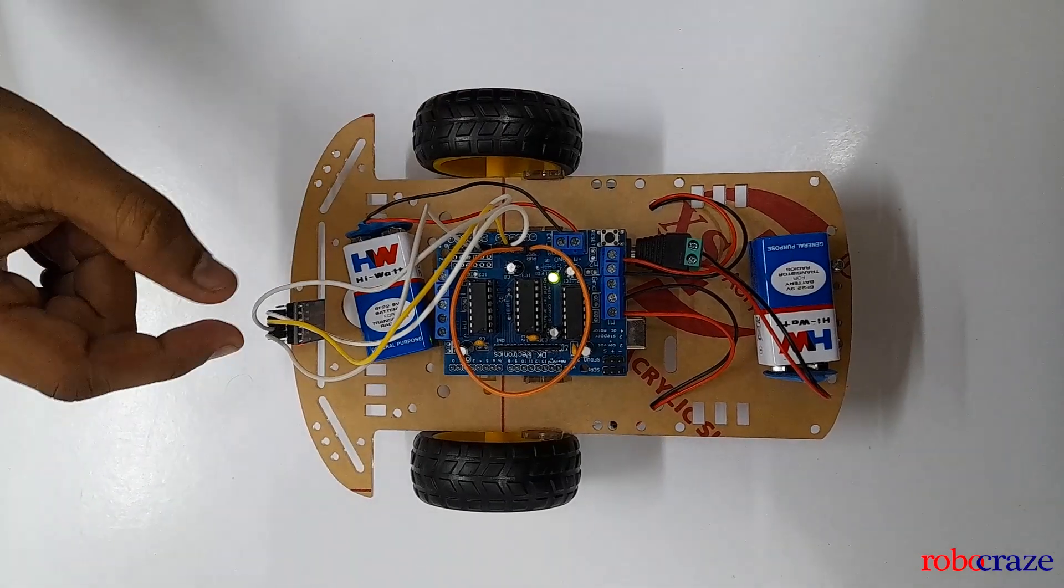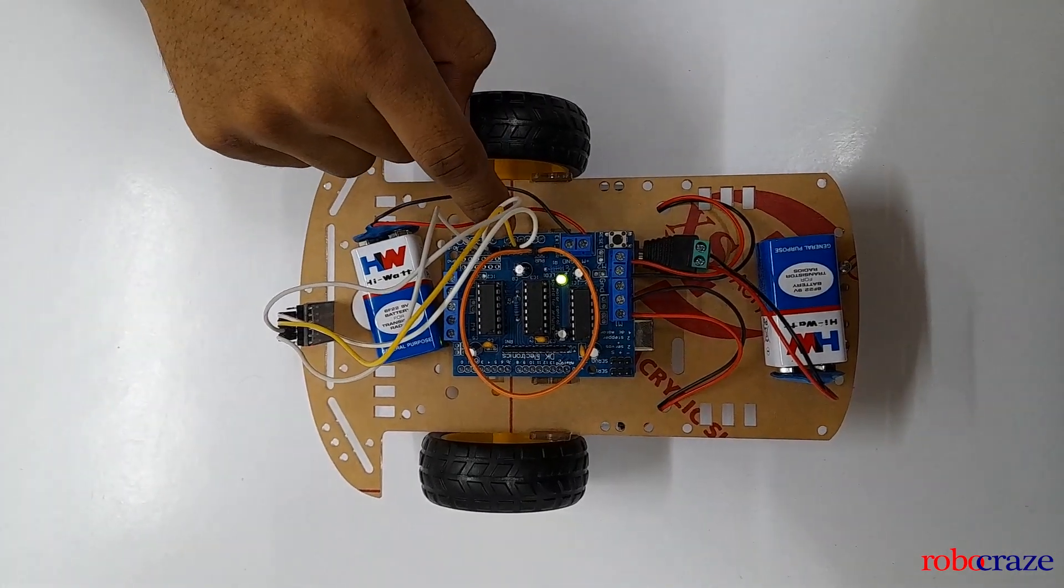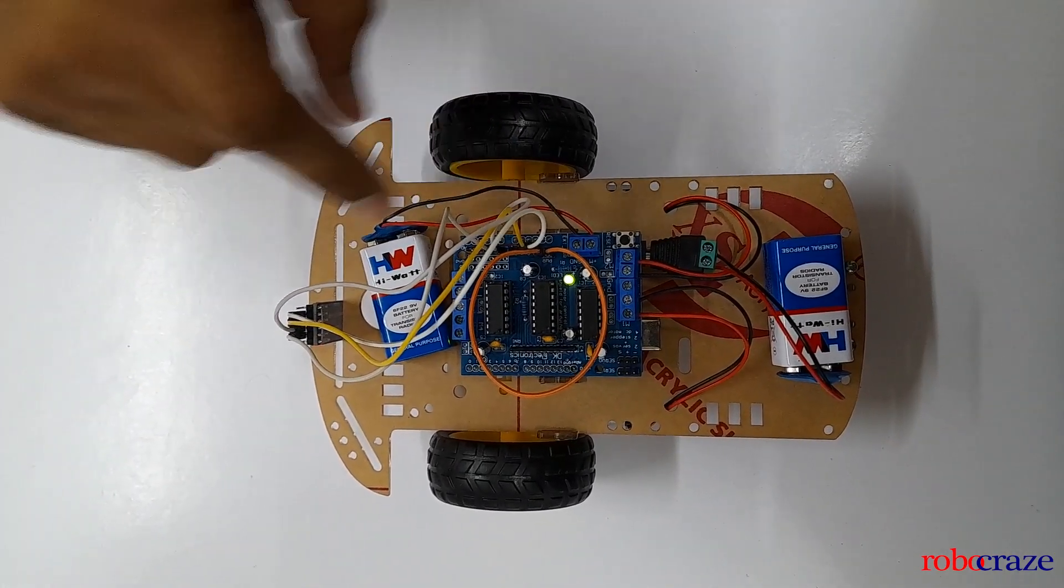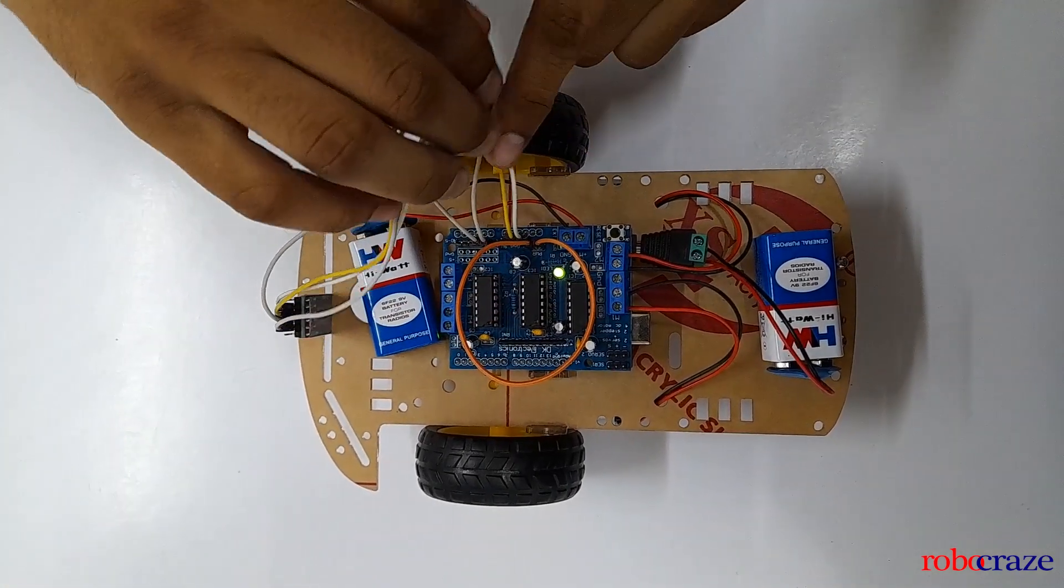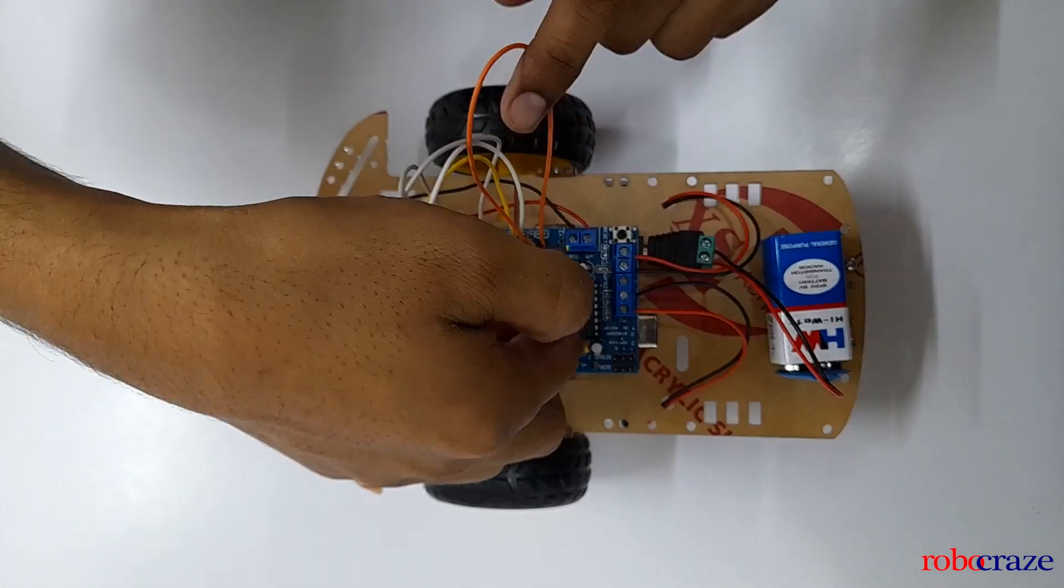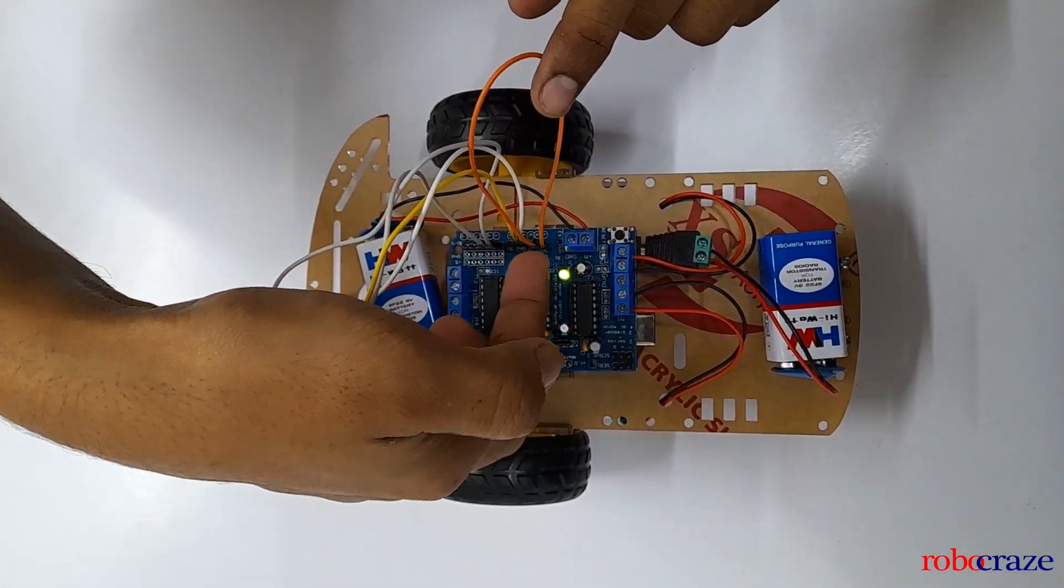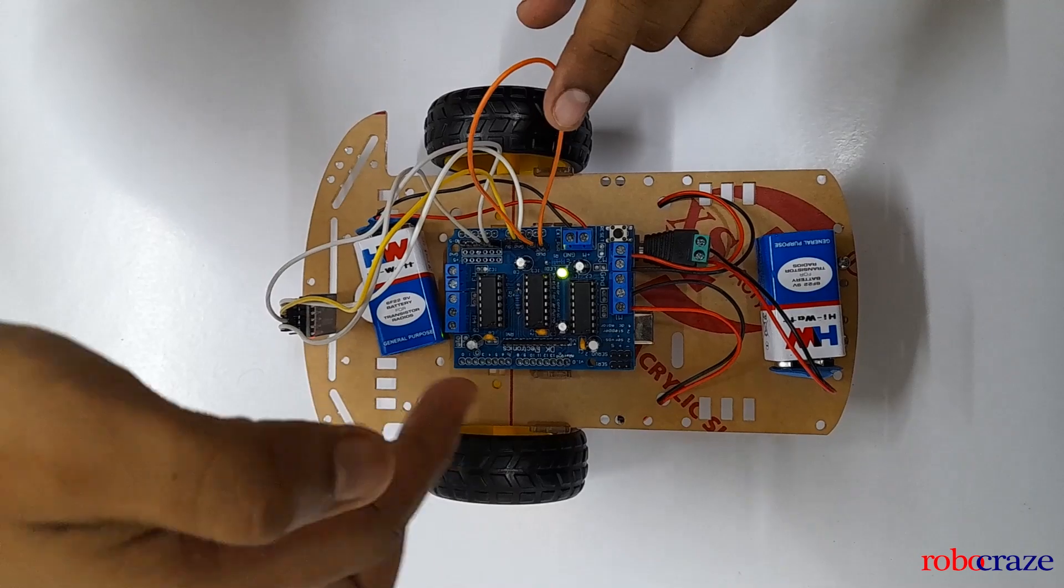As for the Bluetooth module we have connected Vin to 5 volts, ground to ground, and TX of the module to RX of the Arduino that is A0, and RX of the Bluetooth to the TX of the module that is A1. And don't forget to use a jumper wire to connect this power pin. This is very important or else your motors will not get the power.